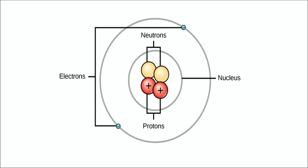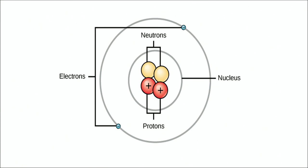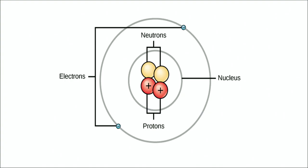Let us see the structure of an atom where electrons and protons are present. In the nucleus, we have two types of particles: one is the proton, which is positively charged, and the other is the neutron, which has no charge. Electrons are negatively charged particles revolving around the nucleus in shells. In an atom, the amount of positive charge and negative charge is equal.